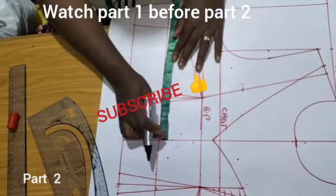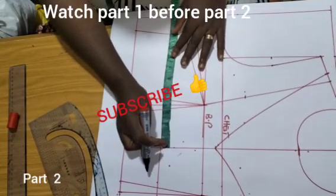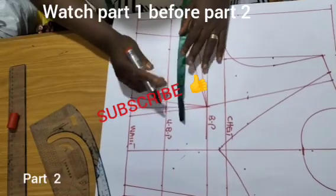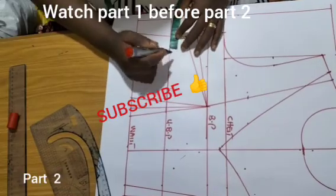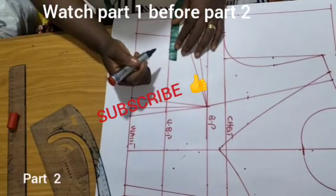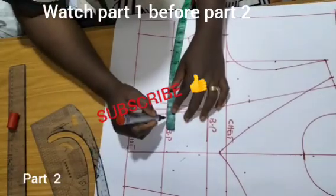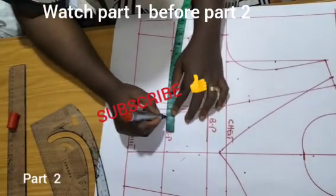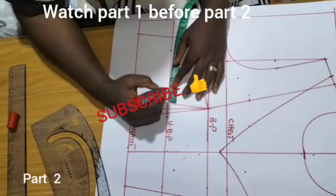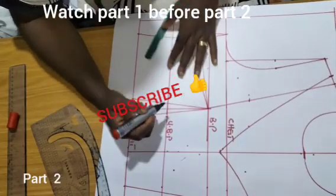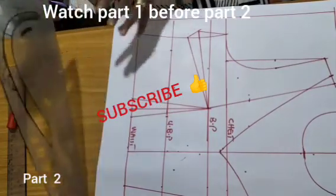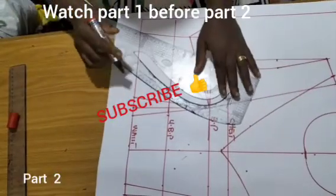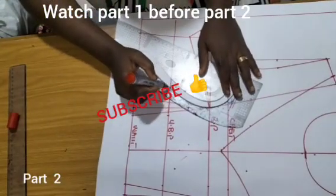For the front line, my underbust divided by 4 will give me 8.75. I'm going to share 0.25 here and 1.25 here. If this is your first time, I will advise you to go back to the other videos on this channel so you will be able to understand how we have been tightening our underbust effectively.